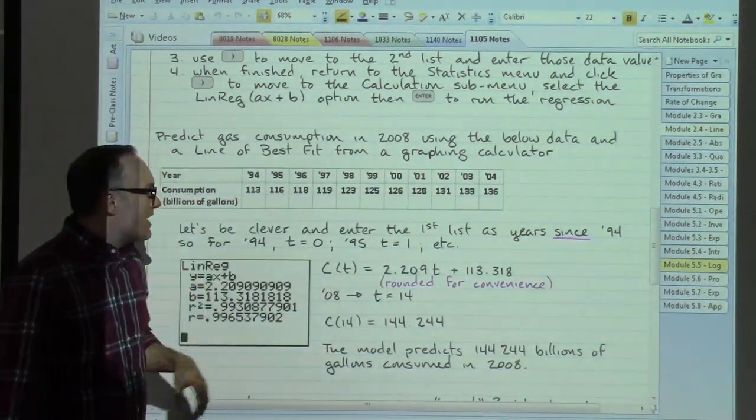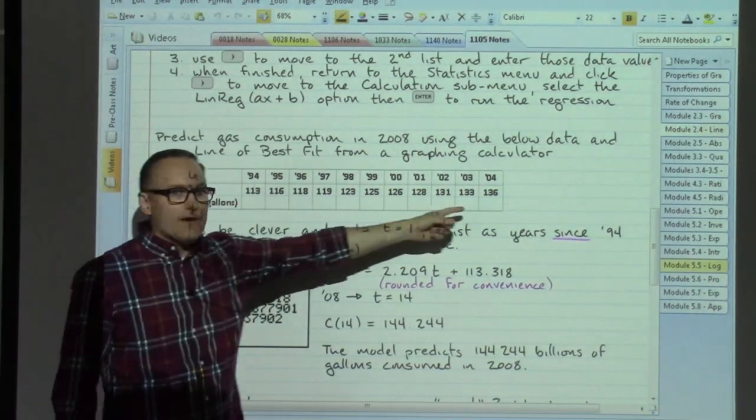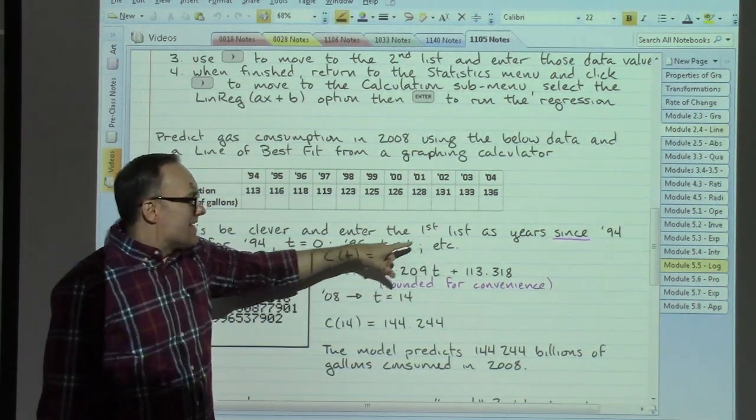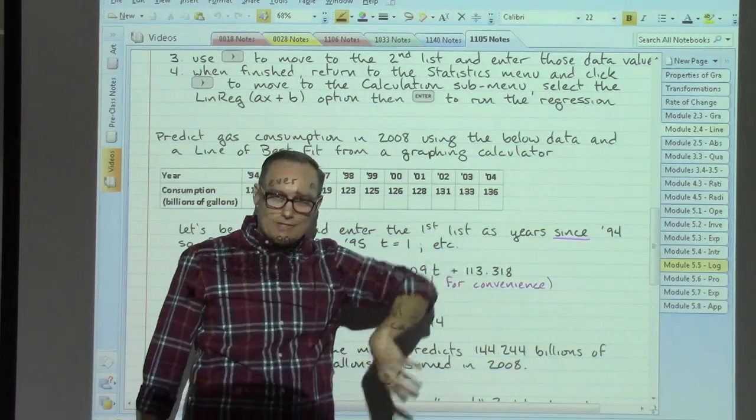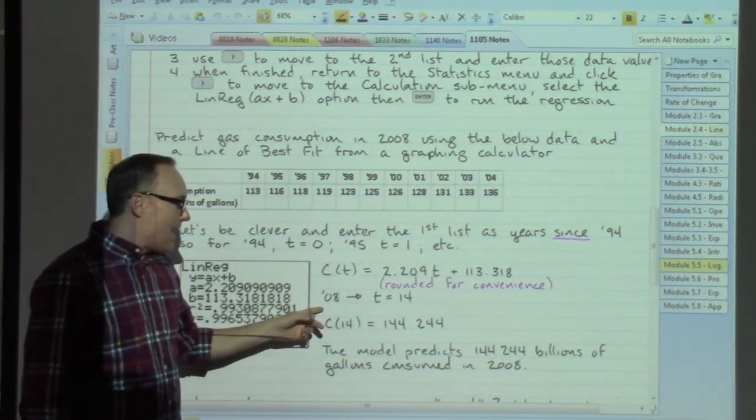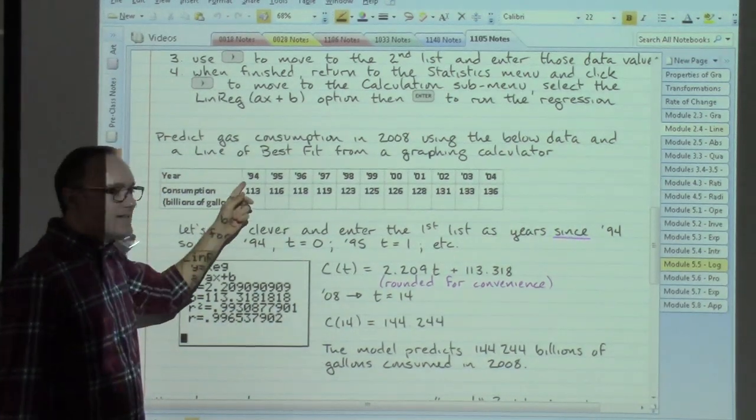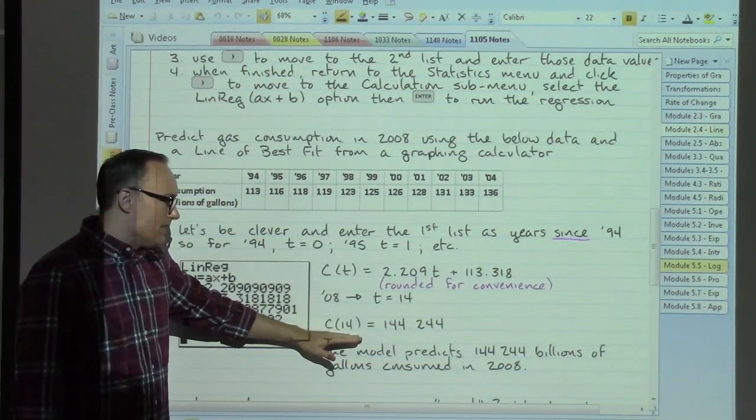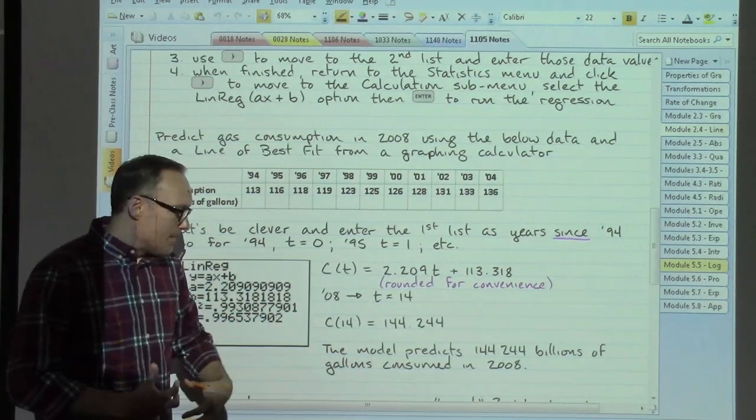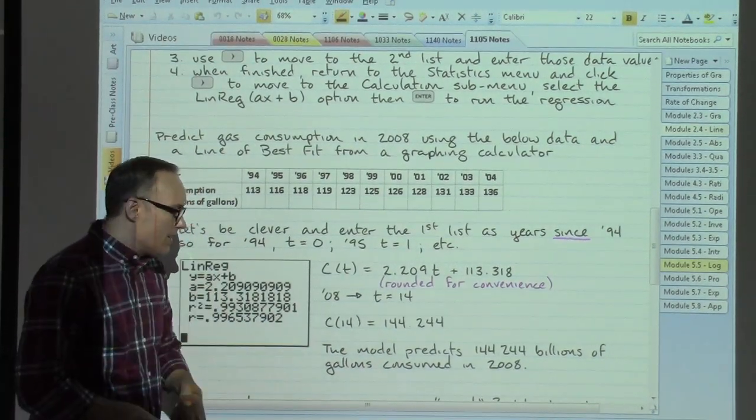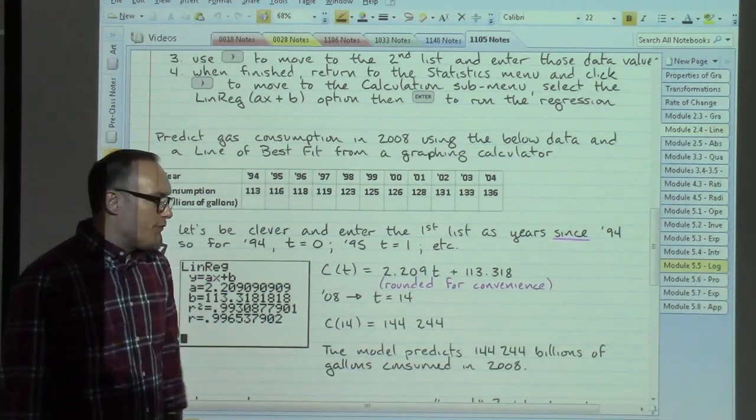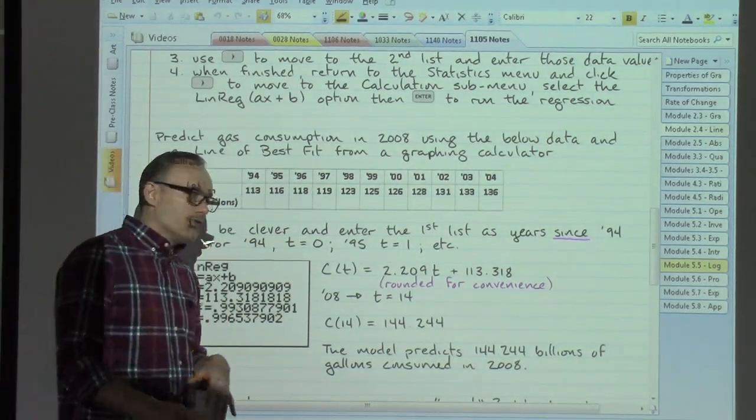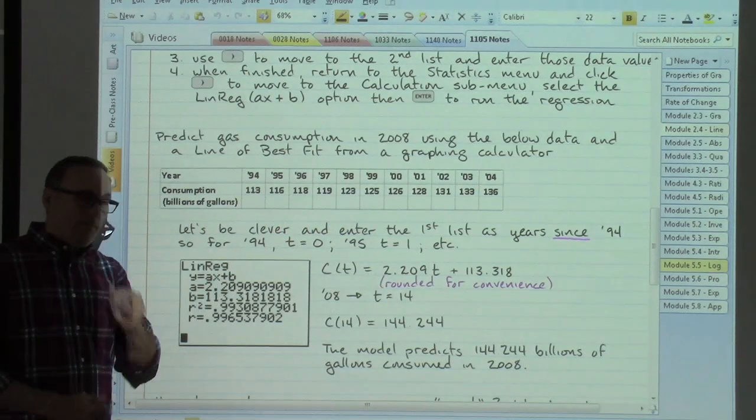Now, if we're asked to predict that gas consumption in 2008, now 2008 is not anywhere in this list. So this is not an interpolation sort of thing. 2008 is outside of our list. That's going to be an extrapolation thing specifically. In 2008, well, 2008 minus 1994 means that t is equal to 14. If we plug in 14, we get our value. That would mean that our model that we have come up with with the help of our graphing calculator predicts that there would be 144.244 billions of gallons of gasoline consumed in that year 2008 based on that collection.